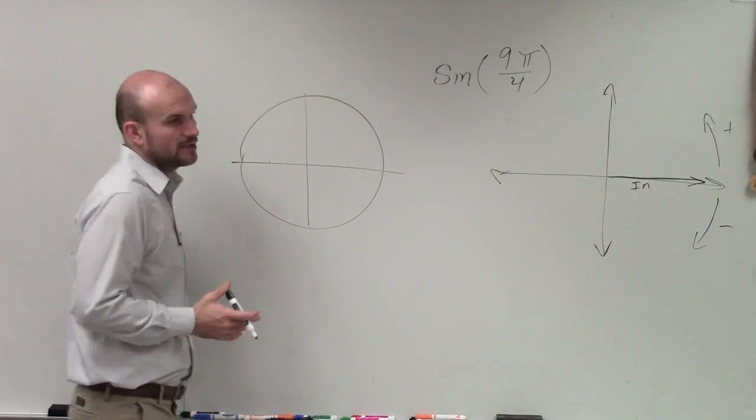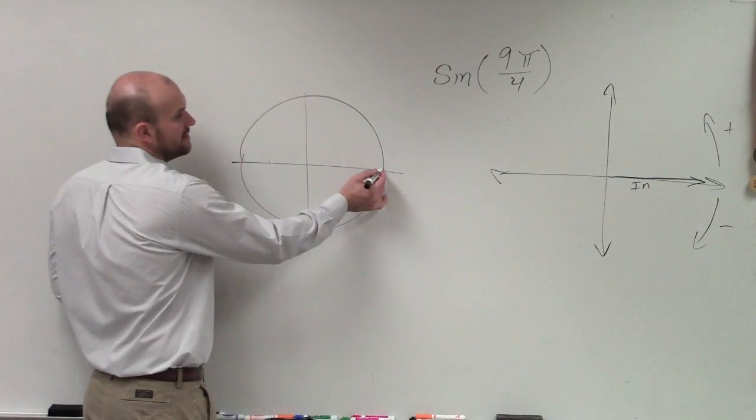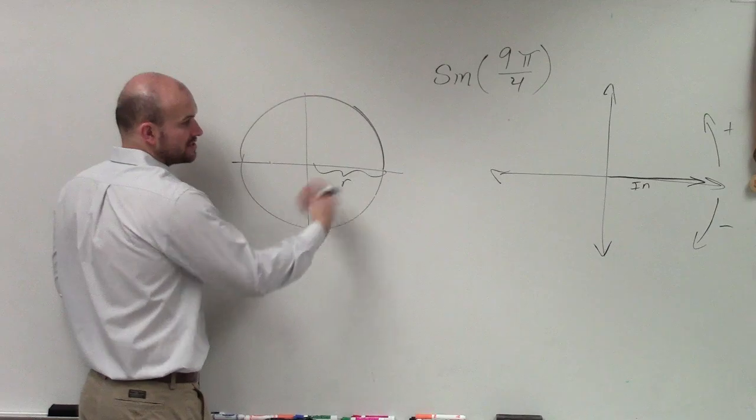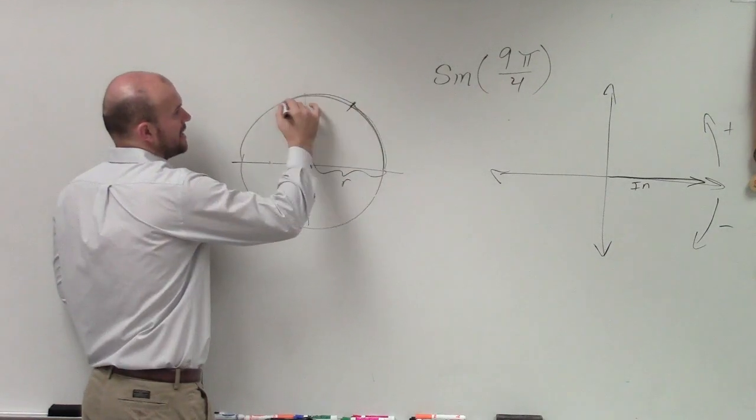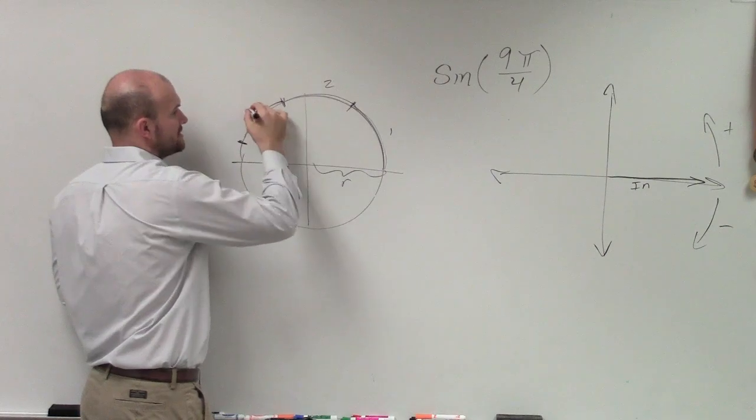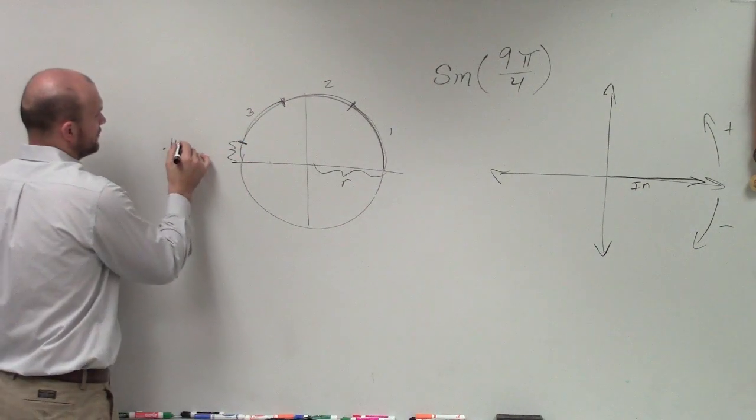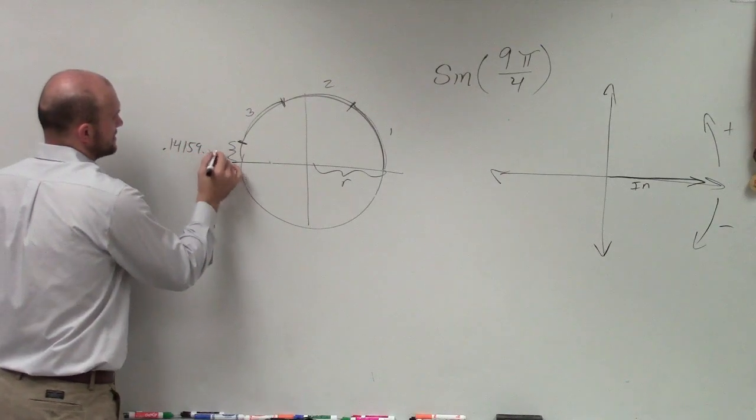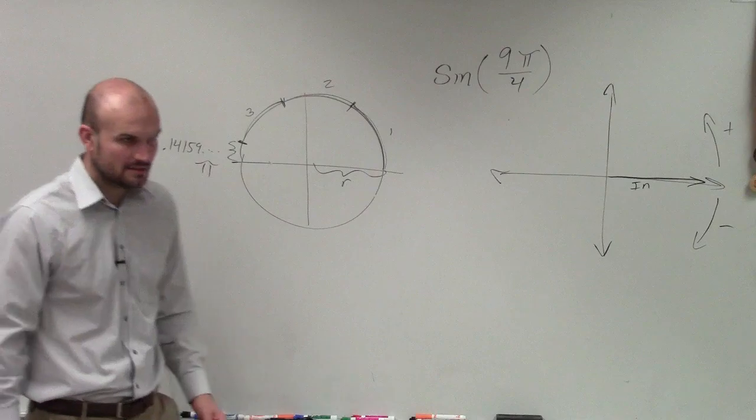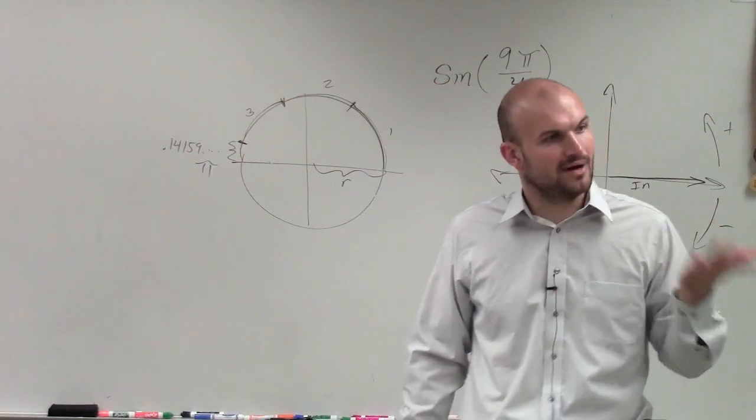Now we're going to rotate 9π over 4. Remember, this is the unit circle. If you take your radius and wrap it around your circle once, twice, three times, this ending part is 0.14159... which is the approximation of π. Halfway around, the number of radiuses that go halfway around a circle is π.